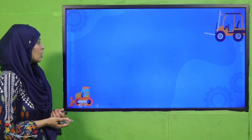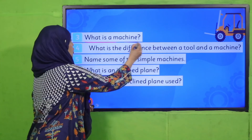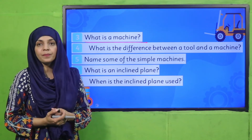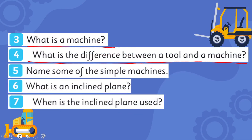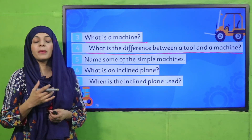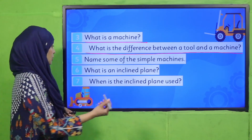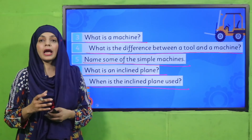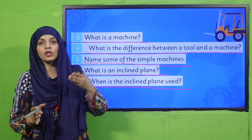Now is the time for evaluation. What is a machine? A machine is a tool which changes the direction of force. What is the difference between a tool and a machine? A tool is an object that makes work easier, whereas a machine changes the direction of force. Name some simple machines: inclined plane, lever, pulley. What is an inclined plane? It is a flat surface which is inclined from one end. What is the use of an inclined plane? An inclined plane is used to lift heavy loads from one level to another.